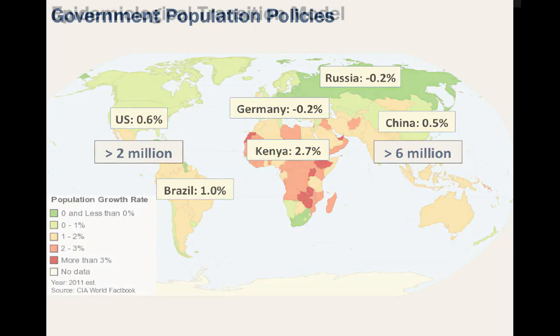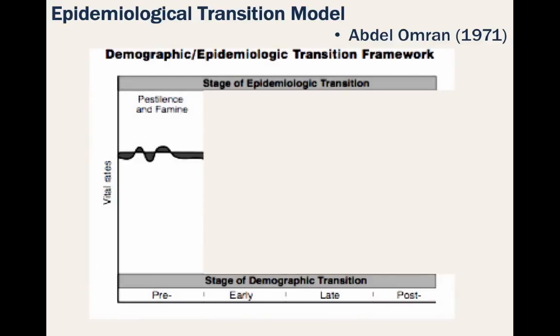Before we get into more population policies, we're first going to look at the epidemiological transition model, first developed by Abdel Omran back in 1971. This is related to the demographic transition model and occurs as a country undergoes the process of modernization from developing nation to developed nation status.